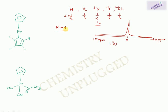Proton NMR is used for metal clusters that have M–H bonds. For compounds without any hydrogen, carbon-13 or phosphorus-31 NMR is used instead. IR is not suitable for detecting M–H bonds because the M–H stretching frequency (2100–1600 cm⁻¹) overlaps with CO stretching and is much weaker than C–H stretching, making it undetectable when CO ligands are present.